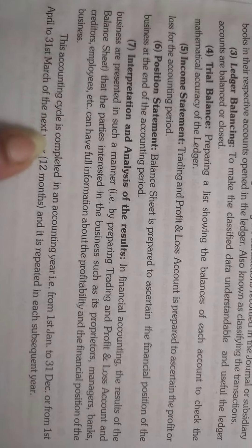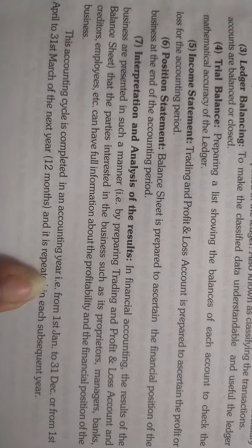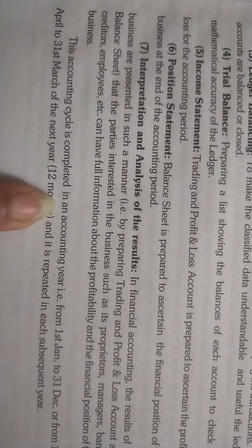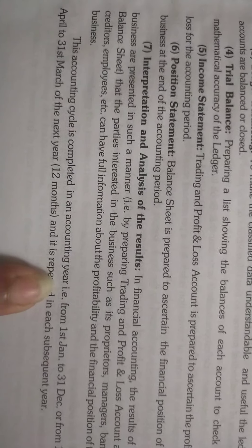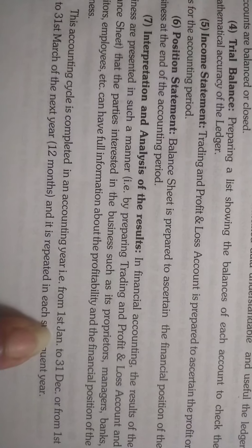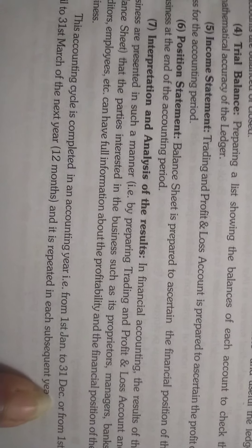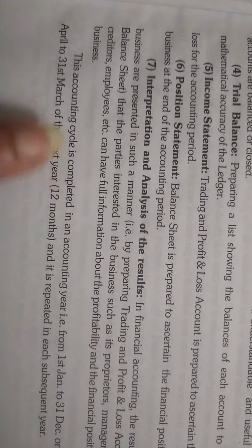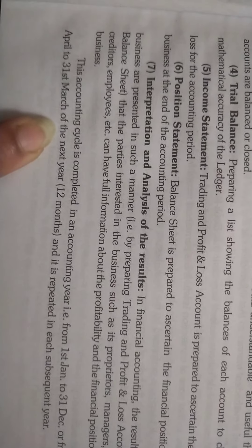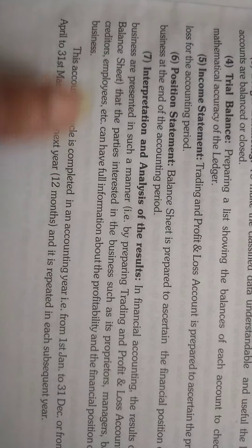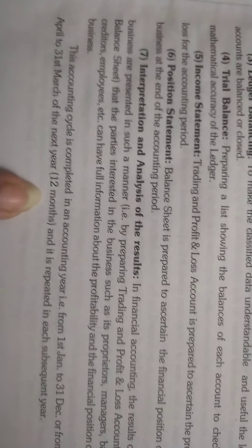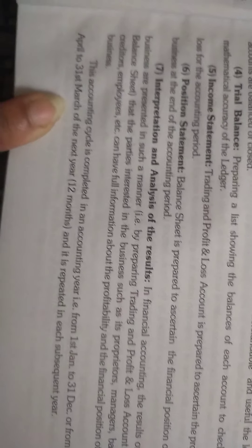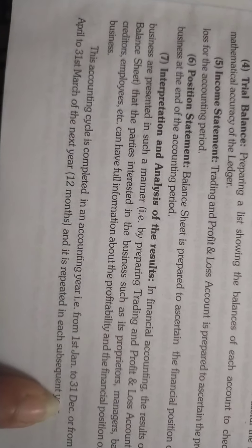The accounting cycle is completed in one accounting year. We start from 1 January to 31 December. This is completed in one year. Also, the accounting year can run from 1 April to 31 March of the next year.